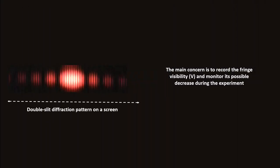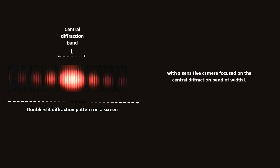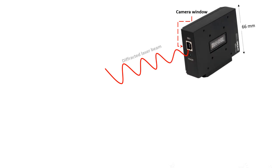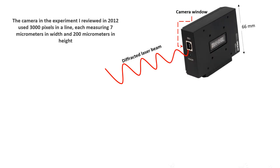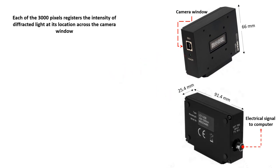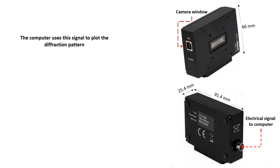The main concern is to record the fringe visibility V and monitor its possible decrease during the experiment, with a sensitive camera focused on the central diffraction band of width L. The camera in the experiment reviewed in 2012 used 3,000 pixels in a line, each measuring 7 micrometers in width and 200 micrometers in height. Each of the 3,000 pixels registers the intensity of diffracted light at its location across the camera window, and the computer uses this signal to plot the diffraction pattern.